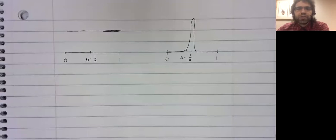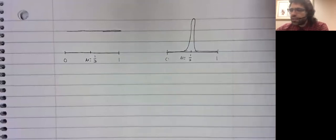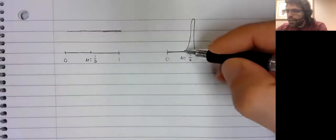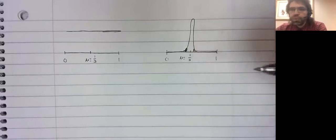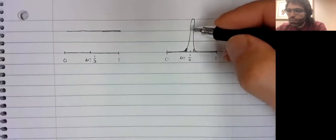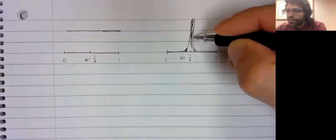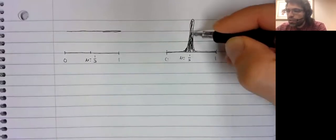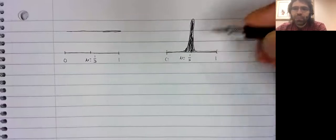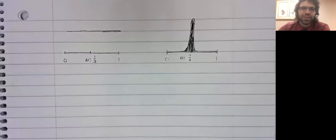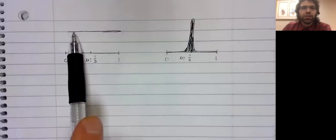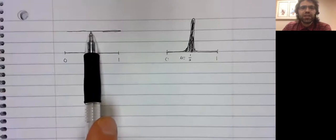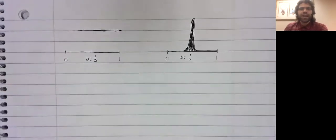And the difference is in how spread out the data is. If you select a number at random over here, the number you select is probably going to be near one half, because this is where the area under the curve is isolated. If you select a number here, it's just as likely to be near the end points as it is to be near one half.